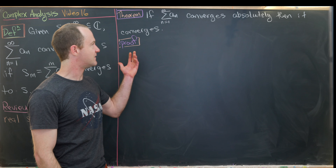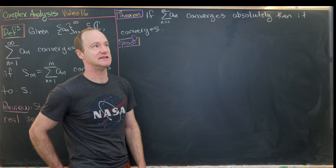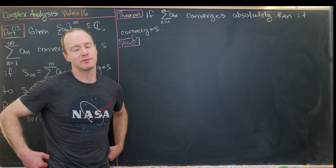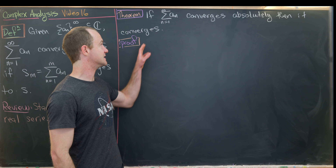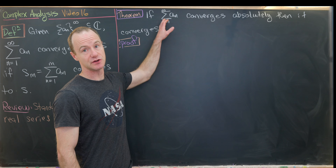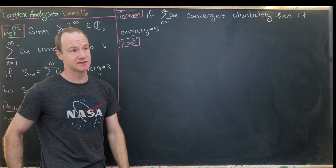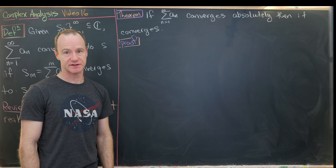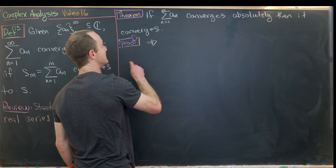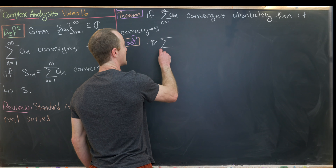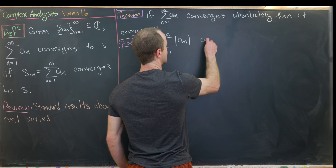Let's start with a fairly straightforward result that gives us an idea for how dealing with series of complex numbers differs from dealing with series of real numbers. We'll show that if the sum from n equals 1 to infinity of a_n converges absolutely — meaning the sum of the modulus of a_n converges — then it also converges in the ordinary sense.